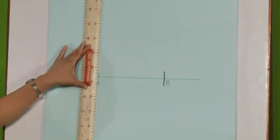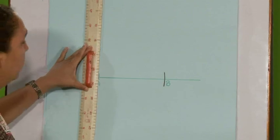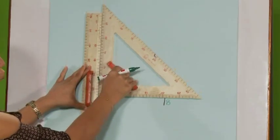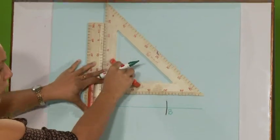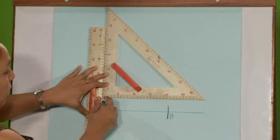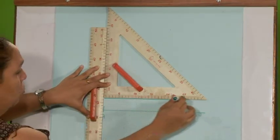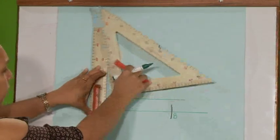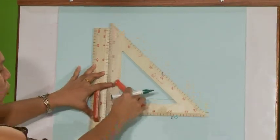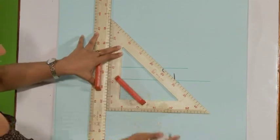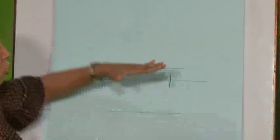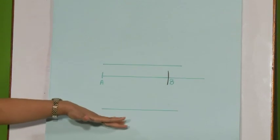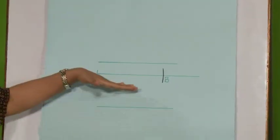Suppose that I want to draw a line parallel to AB but above it — you draw your line there. If I want to do it below, you move your set square down and then draw your line. So, we've got two parallel lines, both parallel to AB.